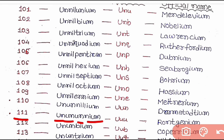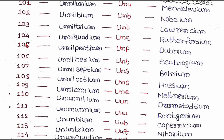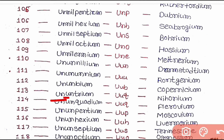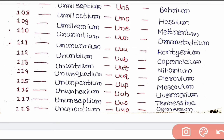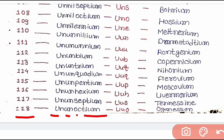Continuing: 111 — un, un, un, -ium — Unununium. 112 — un, un, bi, -ium — Ununbium. 113 — un, un, tri, -ium — Ununtrium. 114 — un, un, quad, -ium — Ununquadium. 115 — un, un, pent, -ium — Ununpentium. 116 — un, un, hex, -ium — Ununhexium. 117 — un, un, sept, -ium — Ununseptium. 118 — un, un, oct, -ium — Ununoctium.